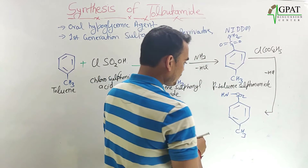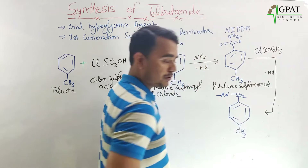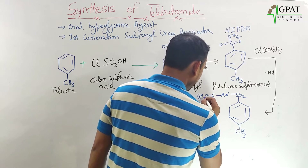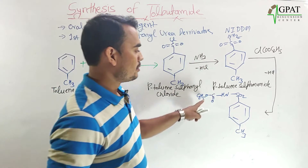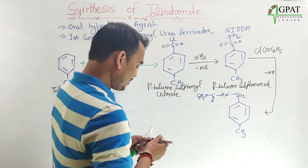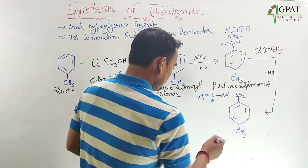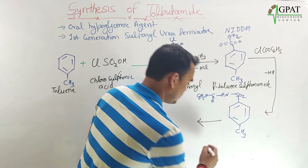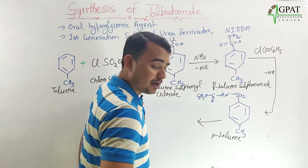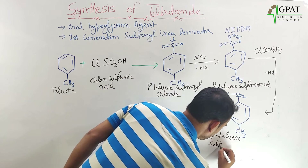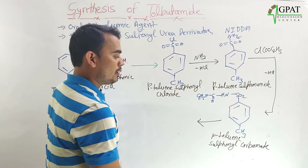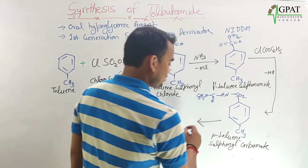The resulting compound is paratoluene sulfonamide carbamide — also referred to as paratoluene sulfonyl carbamide.